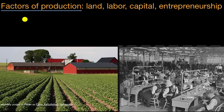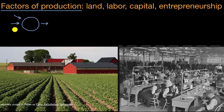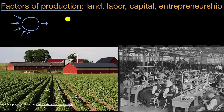The idea here is if you want to produce anything — this circle represents the production process and this arrow is the output — you need inputs. You might need many inputs: supplies, a factory, people to work in the factory. The idea of the four factors of production is that these things can all be classified in one of these four groups: land, labor, capital, or entrepreneurship.